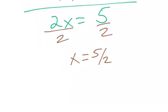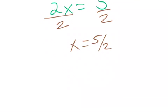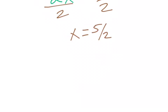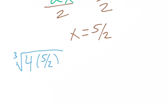x is 5 over 2. But how can I be certain? I can't. I must check. So, what I do is I'm going to do the cube root of 4 times 5 over 2 minus 9.